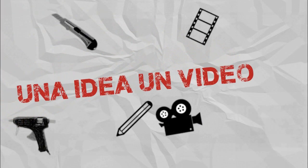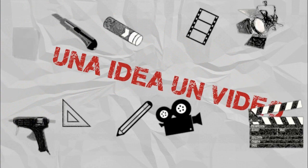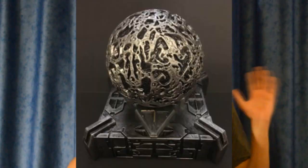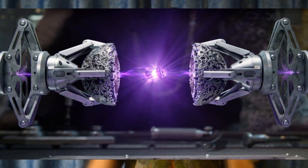Muy buenas a todos y bienvenidos una vez más a Una Idea, Un Video. Hoy vamos a continuar con la serie de las gemas del infinito y vamos a hacer el orbe. Sí, el orbe que apareció en Guardianes de la Galaxia Vol. 1. Este orbe contiene la gema del poder y bueno, nos vamos a centrar en cómo hacer el mecanismo para que el orbe se abra.